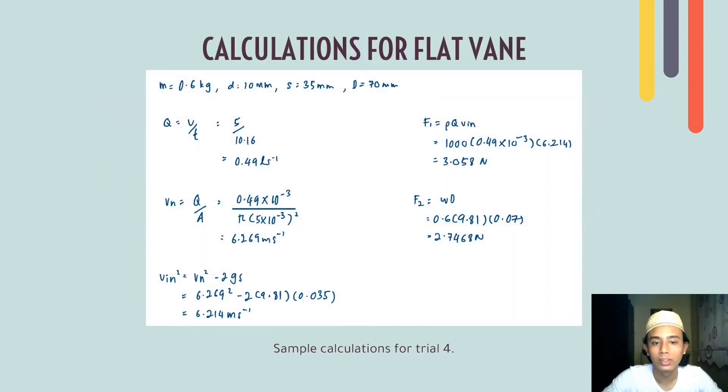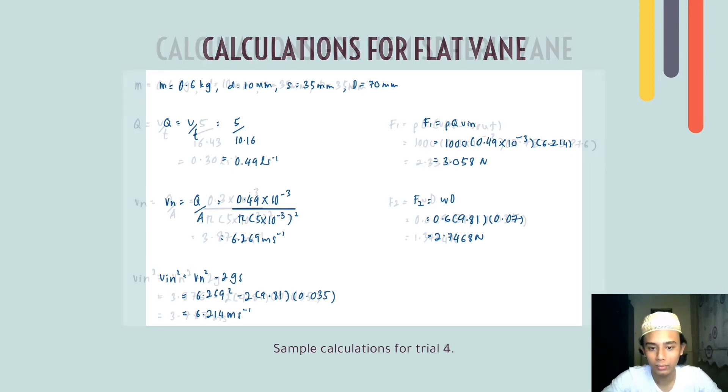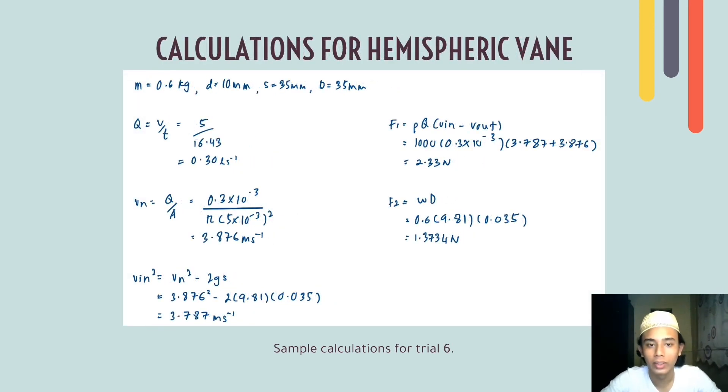This figure shows sample calculations for flat vane, and this is only applicable to trial 4. We use all the equation from the theory part. This figure shows the sample calculations for hemispheric vane and only applicable to trial 6.